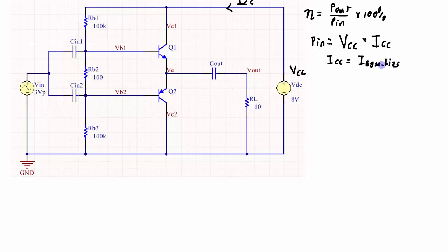ICC is going to be the collector current and I want to know the average of that current. This is going to be very small, basically the 8 volts divided by this resistance. And that resistance in this circuit is so big, 200.1 kilo ohms, that's going to be in the order of around 40 microamps.